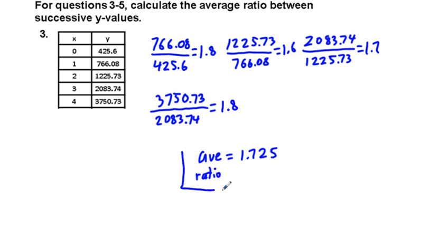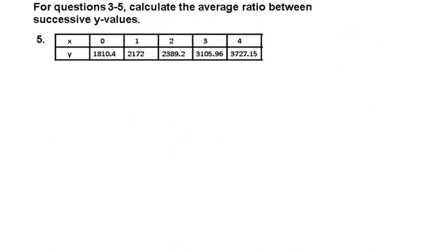So average equals 1.725. That's our average ratio. Not a common ratio quite. Very close. Real world, it's going to be estimates. It's not going to be a perfect common ratio. We're kind of introducing modeling at this point.